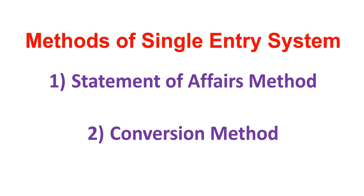In Single Entry System, there are two methods. The first one is the Statement of Affairs method. The second is the Conversion method. Single Entry System uses either the Statement of Affairs method or the Conversion method.